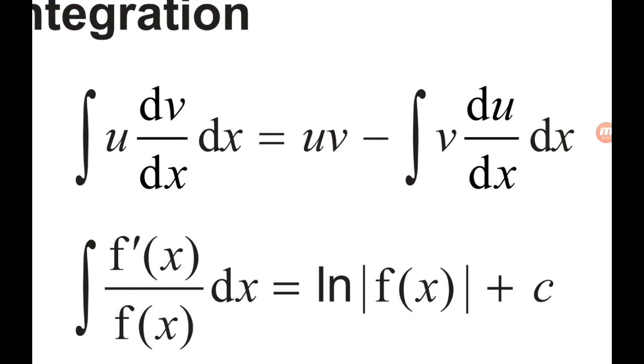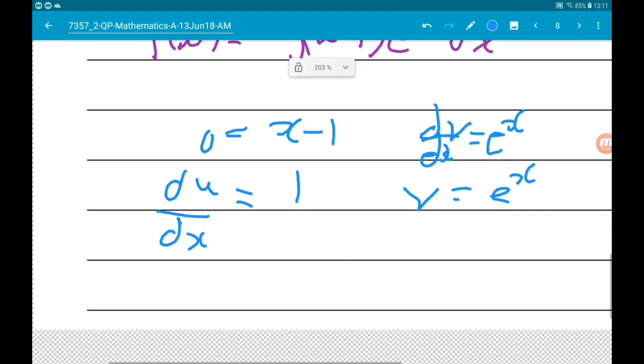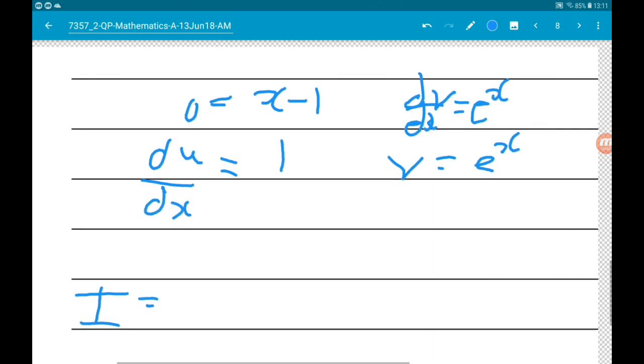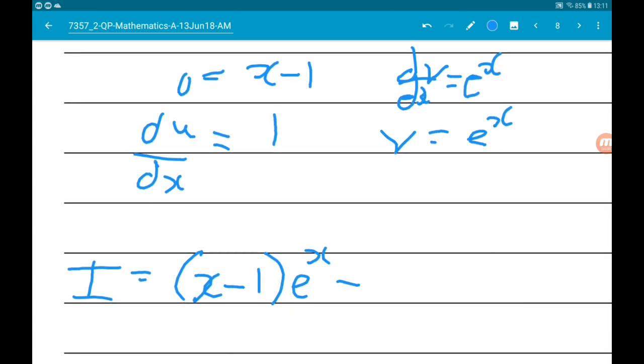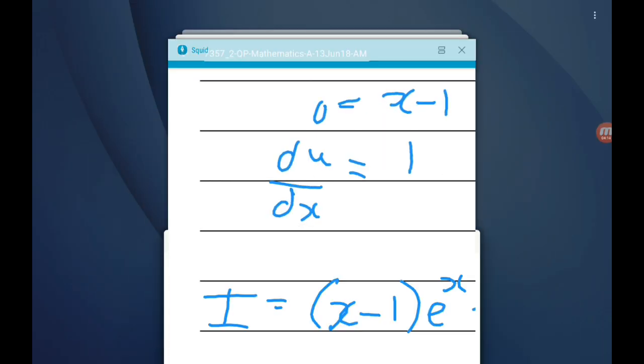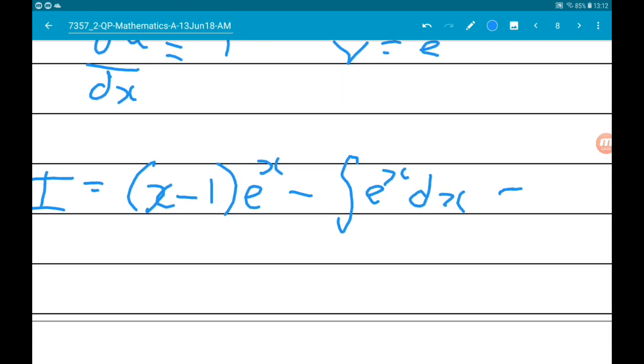So again, using this formula, the integral of u times dv by dx with respect to x is uv minus the integral of v du by dx. So our integral is uv, so x minus one times e to the x, minus the integral of v du by dx. So that is just minus the integral of e to the x with respect to x. And of course, we mustn't forget our constant c.